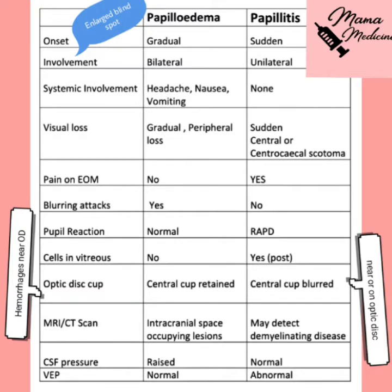In early papilledema, systemic symptoms will be mentioned — headache, projectile vomiting, nausea, and recurrent attacks of blacking out — because only the blind spot is enlarging slowly and the patient is not yet aware, as it's not obscuring vision yet. There is only peripheral loss of vision, whereas in papillitis there is central loss of vision, so papillitis is detected quite early.